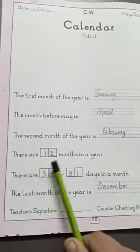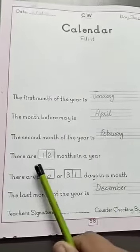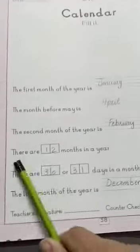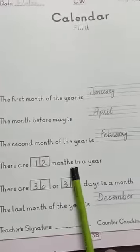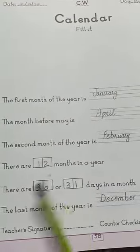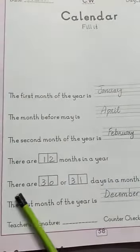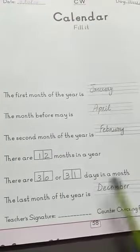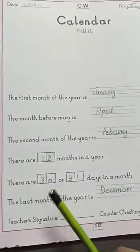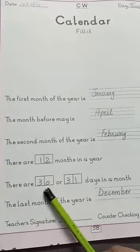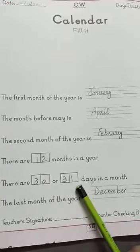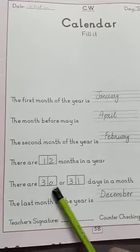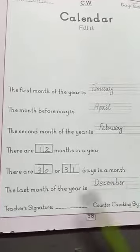How many months are there in a year? There are 12 months in a year. How many days are there in a month? There are 30 or 31 days in a month.